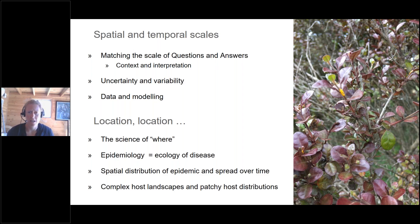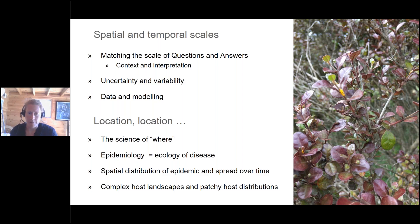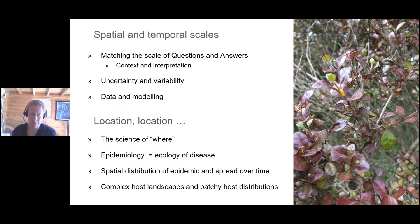Throughout this talk, I'll highlight some of the implications for understanding the spatial and temporal scales around the disease. The importance of matching the scale of our questions to the scale of our answers, and putting them in context so we can interpret them correctly. I have a focus on uncertainty and variability, particularly around data and modelling. My background is landscape ecology — I'm interested in where things are, patterns in space, and the epidemiology of disease. Estimating the spatial distribution of epidemics is crucial to understand spread over time, especially with complex landscapes of multiple hosts and patchy host distributions.